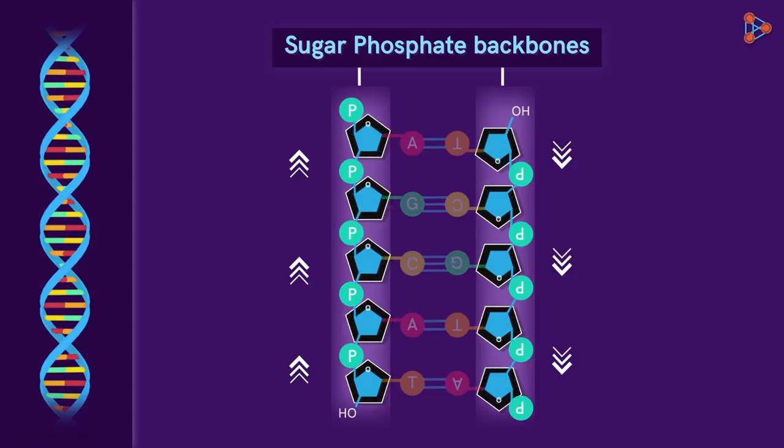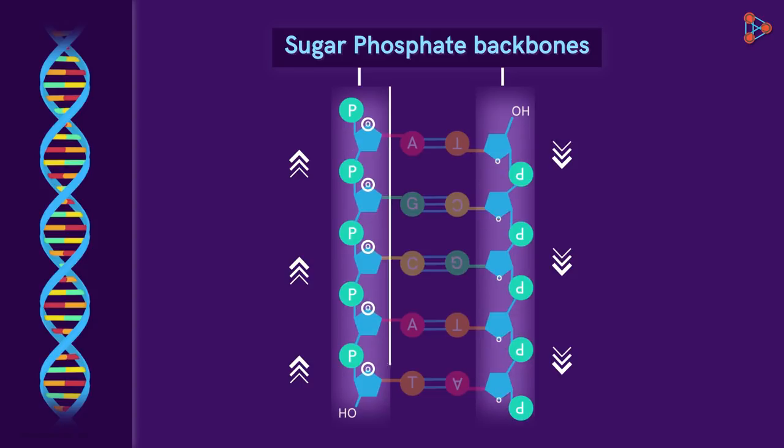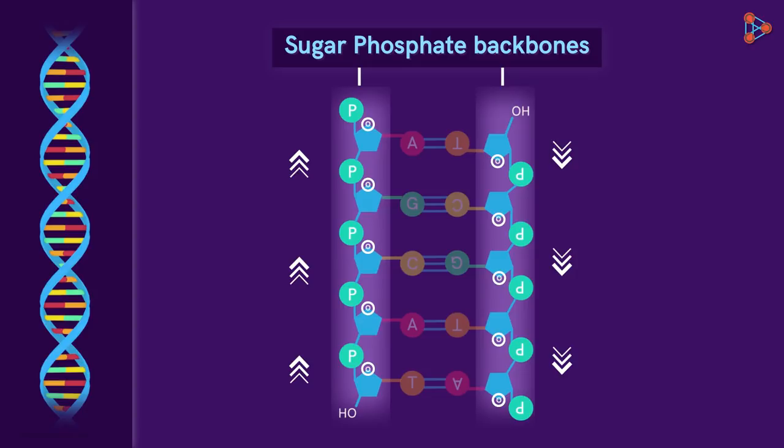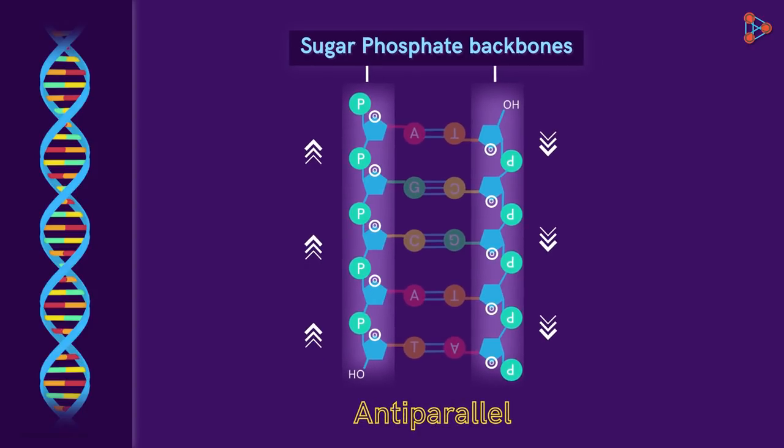To be precise, the oxygen atoms in these sugar molecules are headed upwards, while in these ones, they are headed downwards. So, doesn't it seem that these two strands are running in opposite directions? Yes, they are. This is why the two strands are said to be anti-parallel.